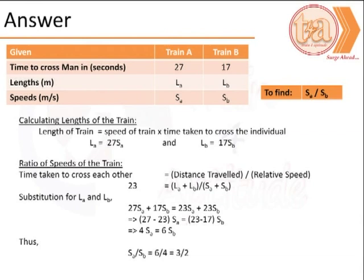The ratio of the speeds of the trains could be found by realizing that the total time taken by the trains to cross each other is the total distance divided by the relative speeds. That is, 23 seconds equals (LA + LB)/(SA + SB).